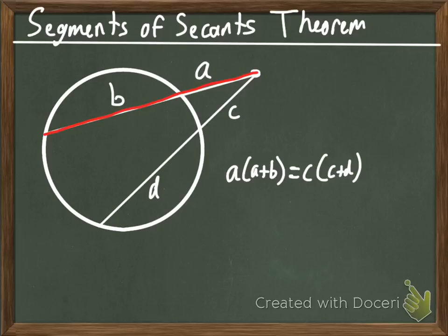And then we have secant that is made up of C and D, where C is the external segment of our secant. Well, what we can do is this. We can take our external segments, multiply them by the sum of the entire secant.